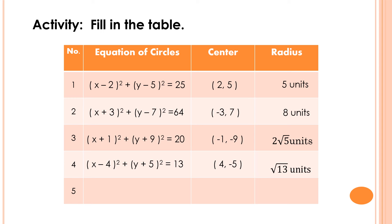For item number 5, the center of the circle is (negative 6, negative 2) and the radius of the circle is 3 square root of 3 units. The value of h is negative 6, the value of k is negative 2, and the value of r is 3 square root of 3. So the equation of the circle is the quantity of x plus 6 squared plus the quantity of y plus 2 squared is equal to 27, because 3 times 3 is 9, and square root of 3 times square root of 3 is 3, so 9 times 3 equals 27.